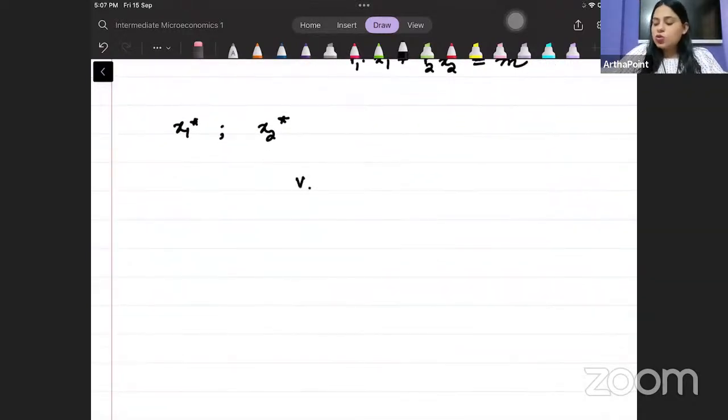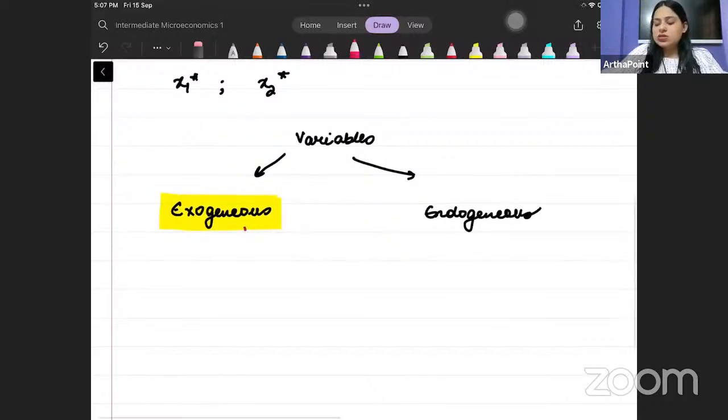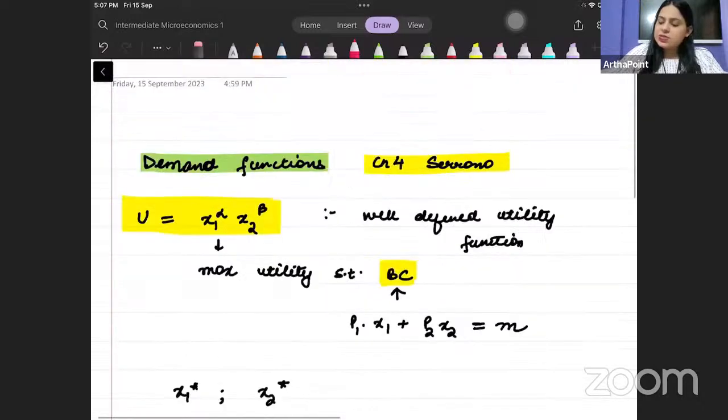Now today, I want to start by discussing Beta two kinds of variables. One is called an exogenous variable and the other is known as an endogenous variable, right Beta? And exogenous variable is that variable which is outside the model. Just go on constant, aren't they? So it is assumed to be constant.